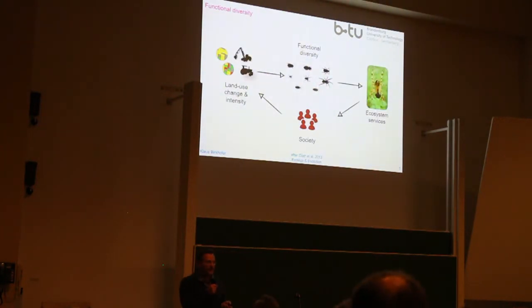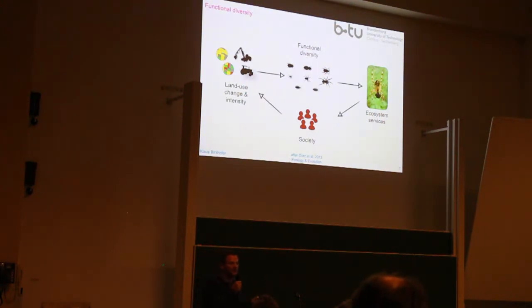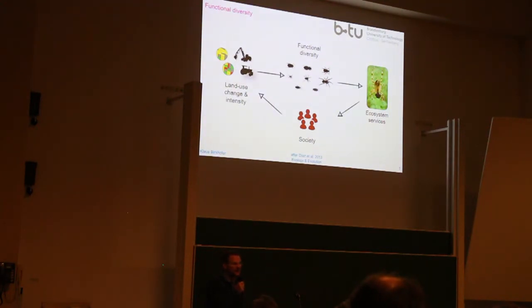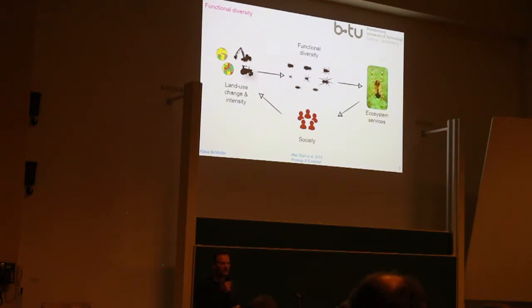The framework is: land use change and intensification are the two drivers I address today. These affect the functional diversity and functional trait composition of invertebrate communities. This in turn links to ecosystem services. Before anyone asks — that image is an orb weaver feeding on an insect. Spiders are important biocontrol agents in agriculture and forestry.